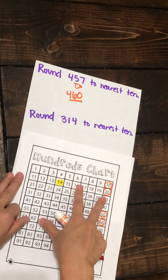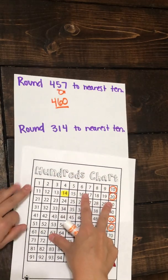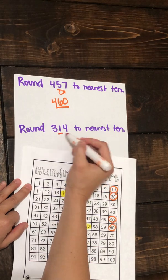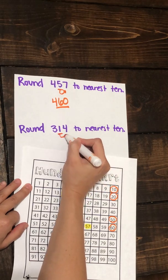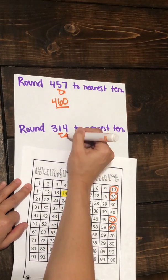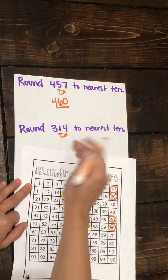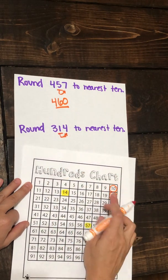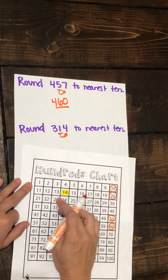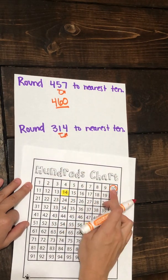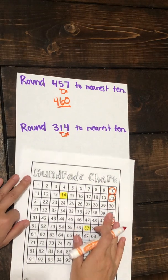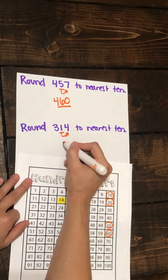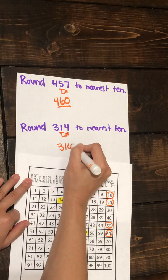So when we're rounding 314, here's our tens place that we're going to be rounding, and we're focusing on where this four is. It is closer to 10 than 20. So 314 rounded to the nearest ten is 310.